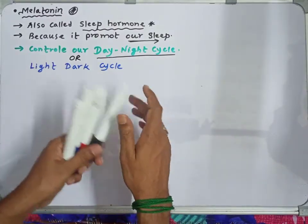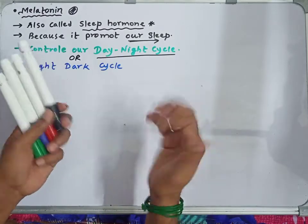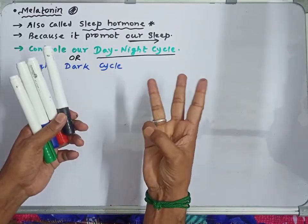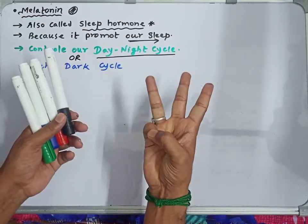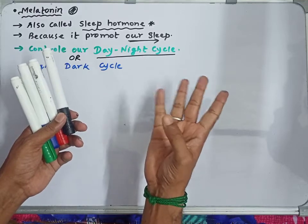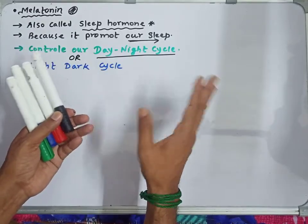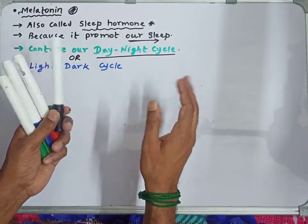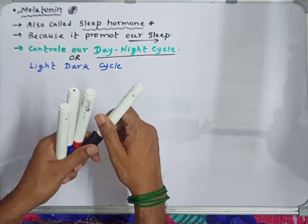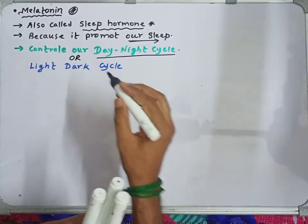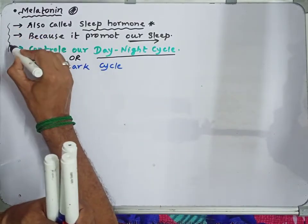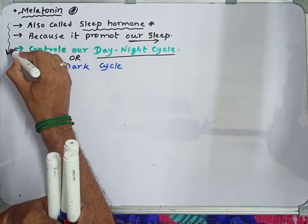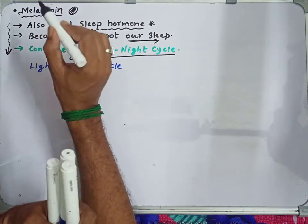We sleep at night, we eat three times during the day, we have dinner and sleep. This rhythm — the pattern of our daily activity — is decided by the pineal gland.